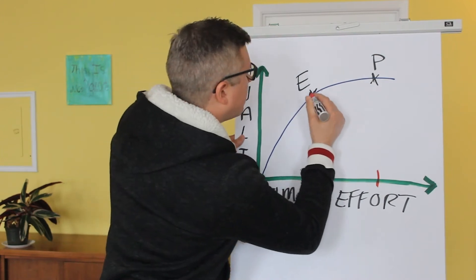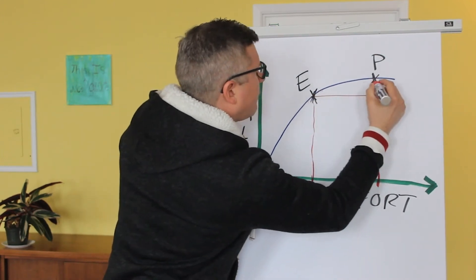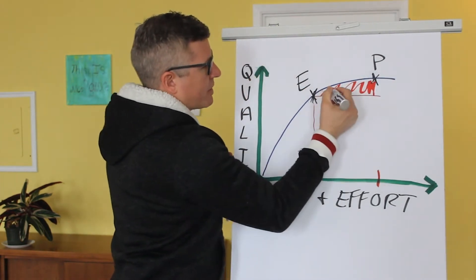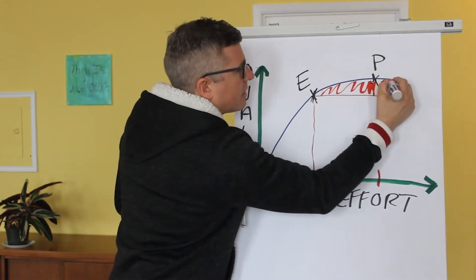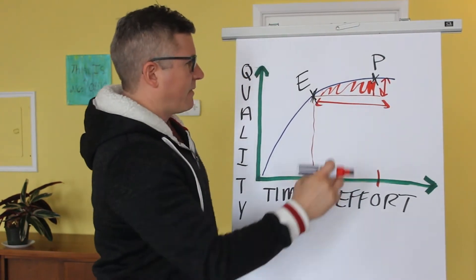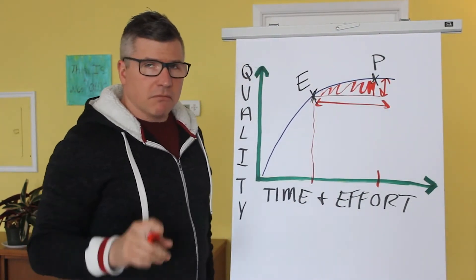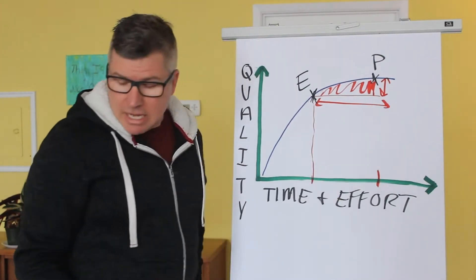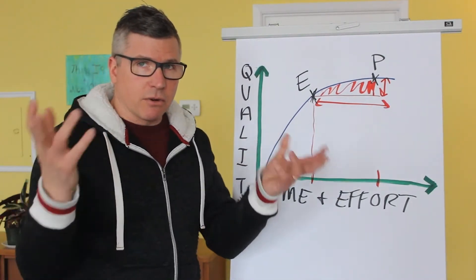But check this out: if we look right here, this is the delta, this is the difference of quality between excellence and perfection. It's this much distance here, that's this much distance of time and effort. So we have a little bit of quality improvement, you probably are the only one that can see it, and all this additional time and effort that goes into creating this so-called perfection.